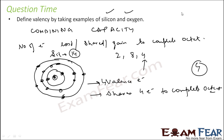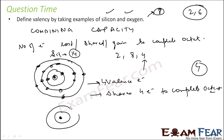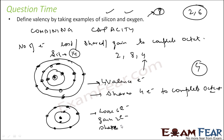Let's take the example of oxygen. Oxygen's atomic number is 8, so the electronic configuration is 2, 6. Oxygen can either lose six electrons, gain two electrons, or share two electrons to complete the octet. Losing six electrons is out of the question — it's not possible. So either it will gain two electrons or share two electrons. In both of these cases, the valency is two.